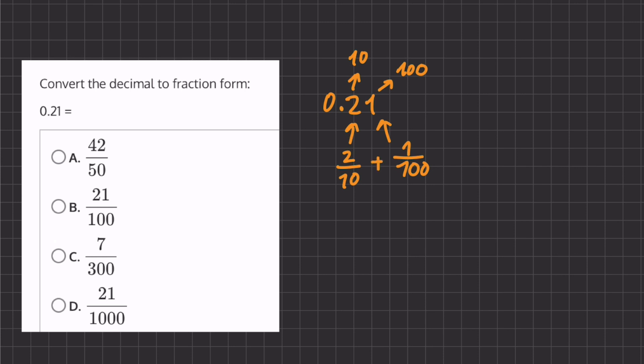but we can also take this 0.21, and we want to get rid of this decimal, so we'll have to move it 2 places to the right. Now, in order to do so, we have to multiply by 100, and we also have to divide by 100 to keep the same value. So, if we do this, we have 21, because we multiplied 0.21 by 100, and we have our denominator of 100.